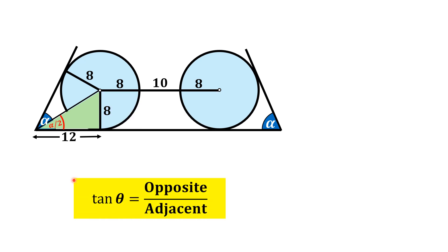So we know that tangent of theta in any right triangle, tangent of theta is always opposite divided by adjacent. So if we consider this angle alpha by 2, this side whose length is 8 units is opposite, and this length whose length is 12 units is adjacent.